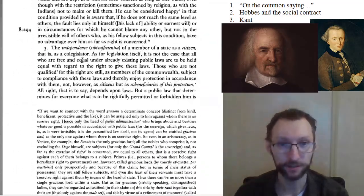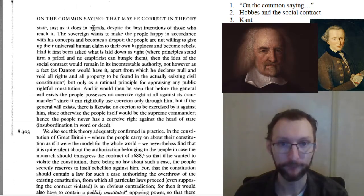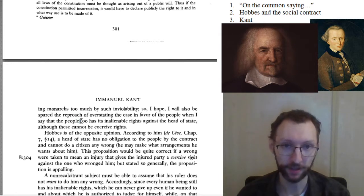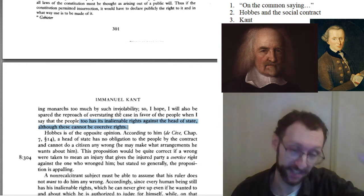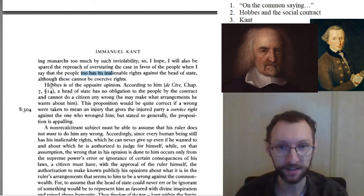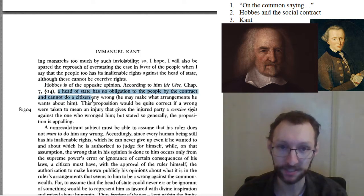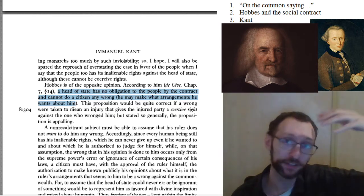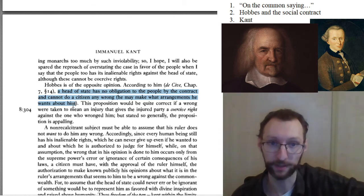Just to have something concrete to look at, we can find the one place where Kant mentions Hobbes by name. After Kant has explained much of his political philosophy, he suggests that people have inalienable rights against the head of state, although these cannot be coercive rights. He notes Hobbes is of the opposite opinion: according to Hobbes, a head of state has no obligation to the people by the contract and cannot do a citizen any wrong — he may make what arrangements he wants about them. You can basically imagine that for Hobbes, you give up your rights to the state when you sign the contract, and now the sovereign can do whatever they want. They have the right to do whatever they want to you, and they have no obligation to any of the citizens — the sovereign is just completely in charge.